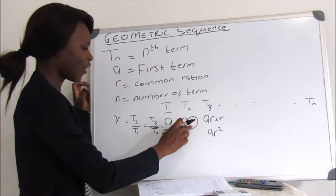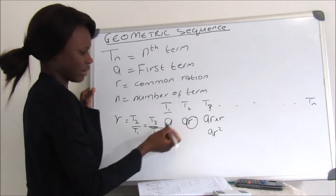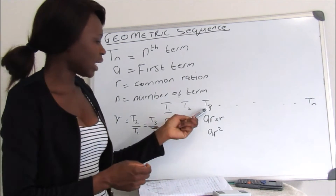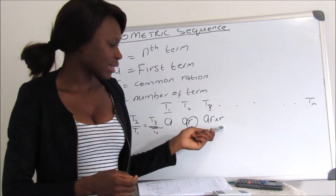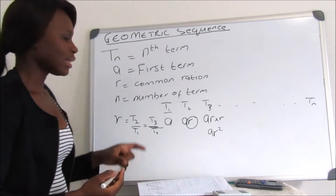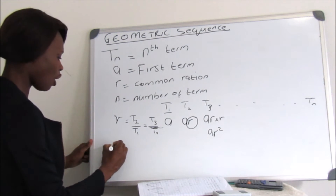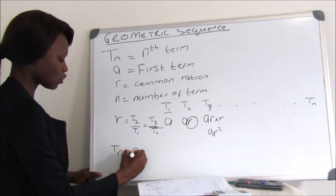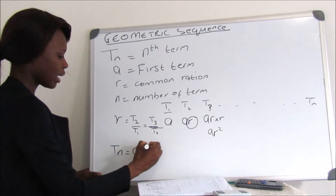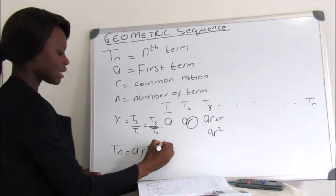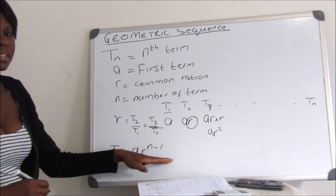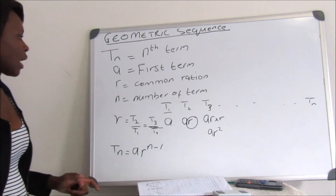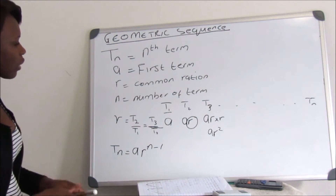In T2, R has an exponent of 1. In T3, R has an exponent of 2. This brings us to the standard equation for geometric sequence: Tn equals A times R to the exponent of n minus 1.